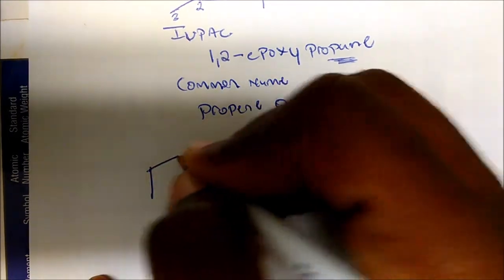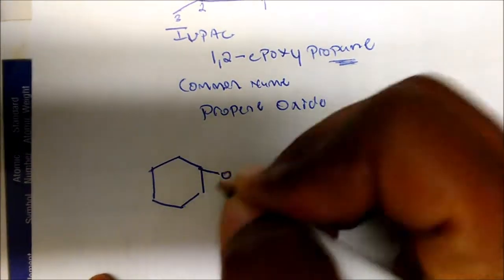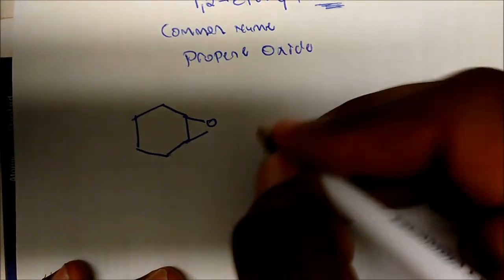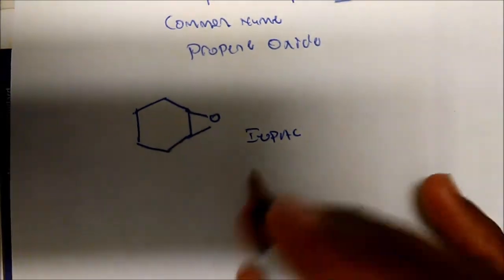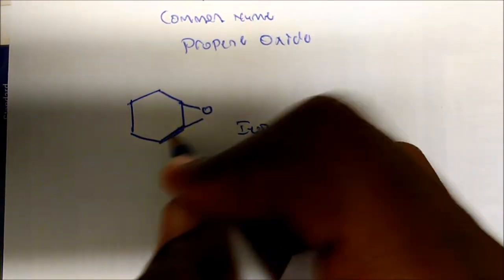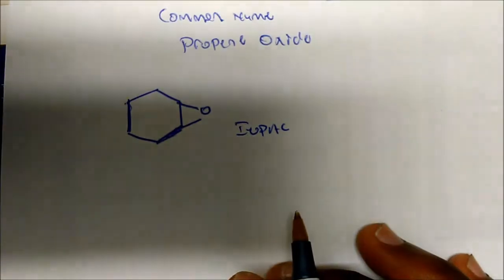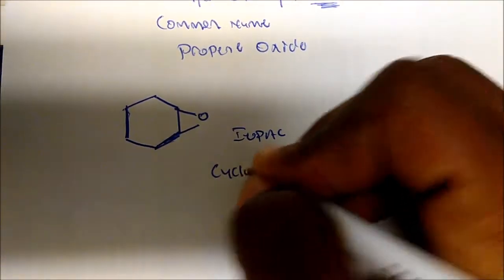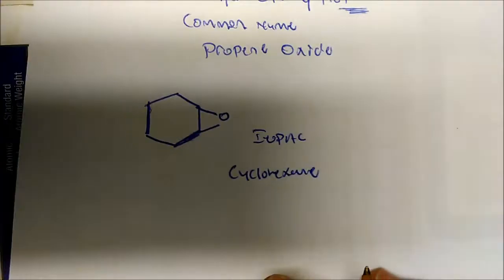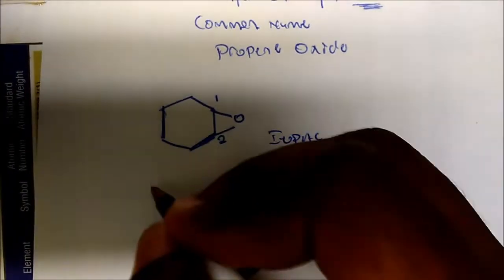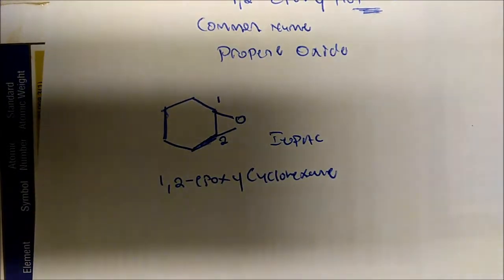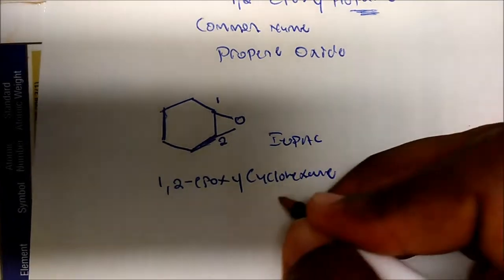What if you wanted to name this next molecule? What would be its IUPAC name? Well, we have a ring here — this is cyclohexane, so the parent name is cyclohexane. We want to give the epoxide the lowest number possible, so we call this carbon one and this carbon two. This is 1,2-epoxycyclohexane.